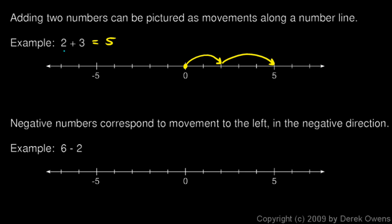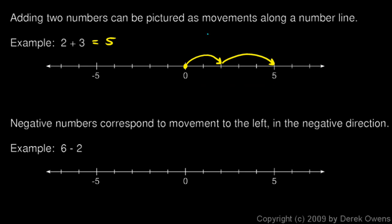You already knew that two plus three is five. What you want to see is that this equation corresponds to this picture: two plus three means starting at zero, going two to the right, and then three more to the right, makes us end up at five. So five is the answer.